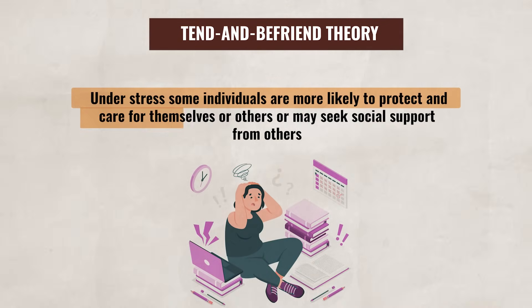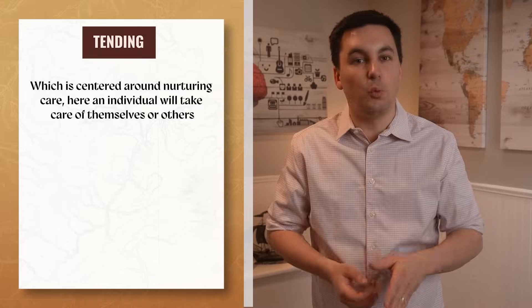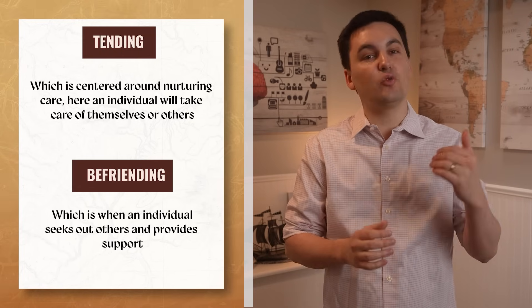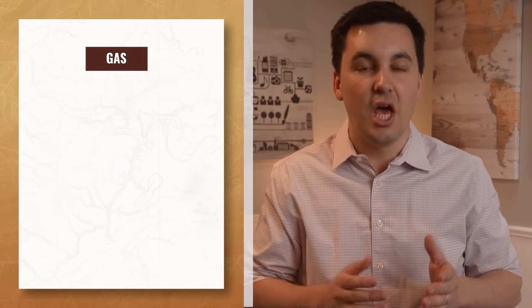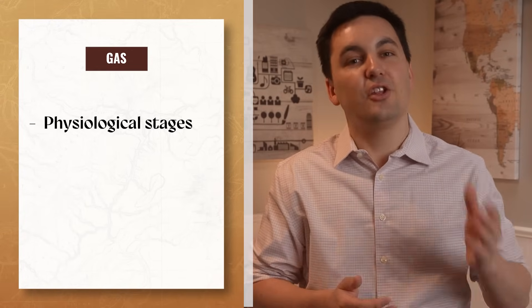Another theory we need to look at when handling stress is the Tend and Befriend Theory. Unlike the GAS, which highlights the fight-flight-freeze response, the Tend and Befriend Theory suggests that under stress, some individuals are more likely to protect and care for themselves or others, or may seek social support. The first part is Tending, centered around nurturing care — taking care of oneself or others to minimize the stressor. The next part is Befriending, when an individual seeks out others and provides support, helping them feel a sense of safety and reducing stress through cooperation and social connections. Some research suggests this theory may be more prevalent with women, showing that different sexes react to stress differently. The Tend and Befriend Theory emphasizes behavioral responses centered around care and social connections, while the GAS focuses on the physiological stages the body goes through during stress.